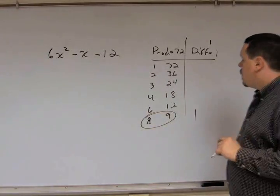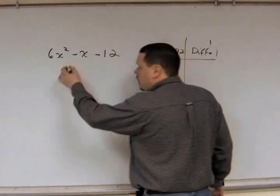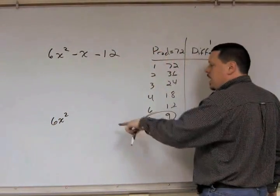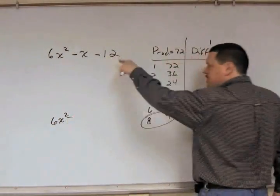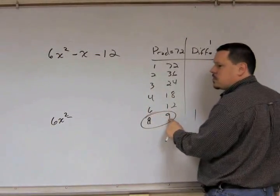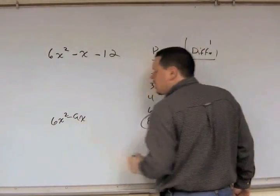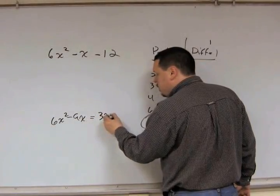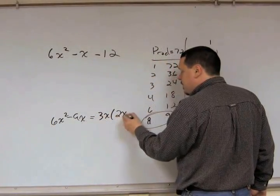So, what you're going to do is you're going to take your first term, 6x squared. And then you're going to subtract, instead of just x, you're going to do the larger of your two numbers, 9x. So, you have 6x squared minus 9x. Factor out your GCF, which is 3x. And you're left with 2x minus 3.